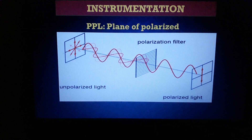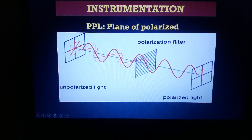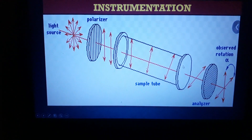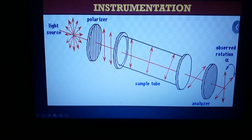Plane of polarized light: a light source produces multi-directional electromagnetic waves. When this multi-directional light is passed through a Nicol prism or polarization filter, it produces a unidirectional, single-plane monochromatic light — this is called polarized light. In the instrument, the light source produces multi-directional light, the polarizer (Nicol prism) converts it to a single plane of light, and this is then passed through the sample tube.